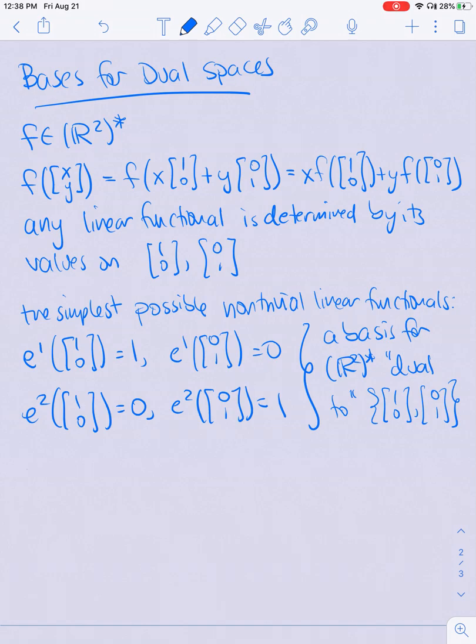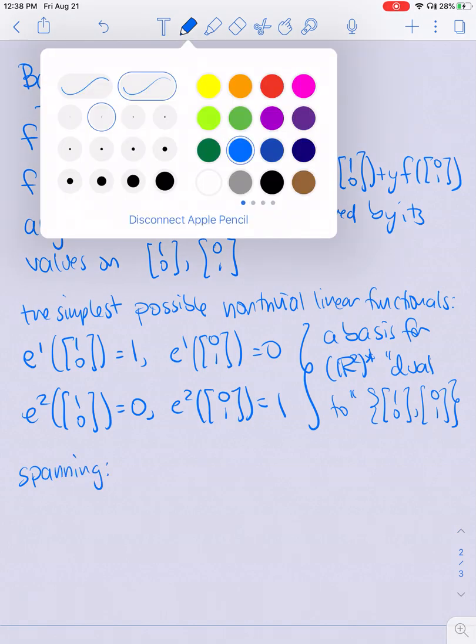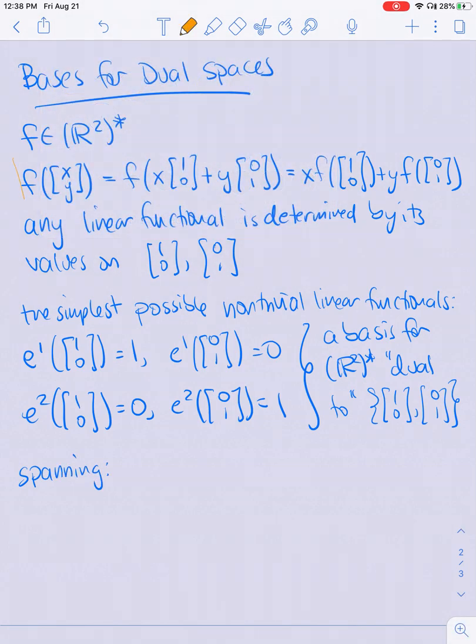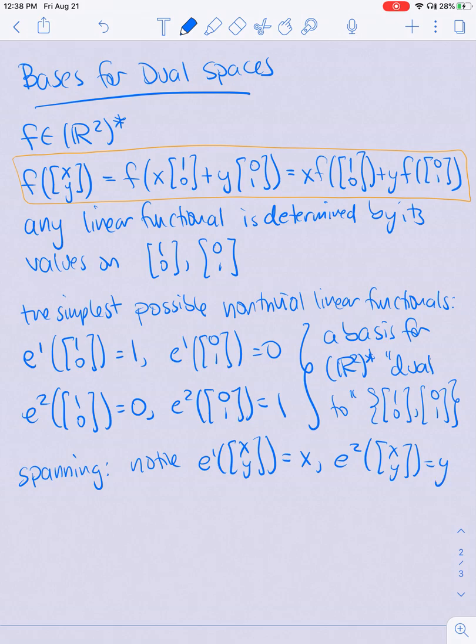So to check spanning, let's take this equation up here and rewrite it using E¹ and E². So notice that E¹ of (X, Y) is just going to be X and E² of (X, Y) is just going to be Y. You can compute this using the same method that we use to compute the orange equation above.